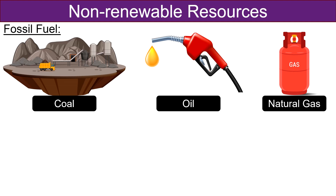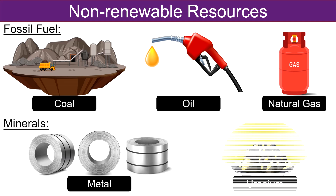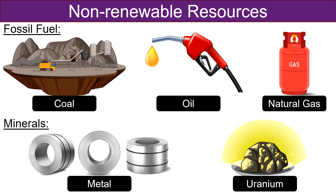Natural gas is composed mainly of methane and is used for heating, electricity generation, and as a fuel for vehicles. Another example of non-renewable resources is minerals — metals like iron, copper, and aluminium mined from the Earth's crust. These metals are essential for various industrial applications including construction, electronics, and transportation. Once extracted and used, these metals are not replaced on a human time scale. Uranium is used as a fuel in nuclear power plants for generating electricity; it undergoes fission reaction to release energy.